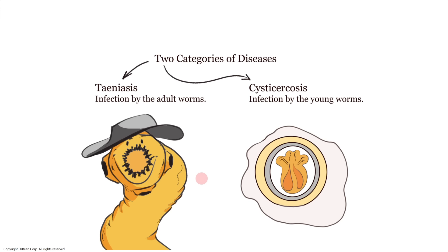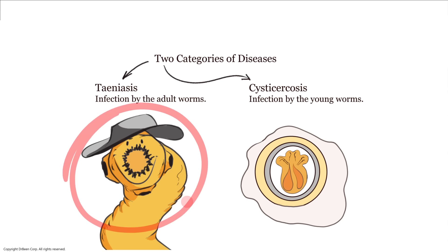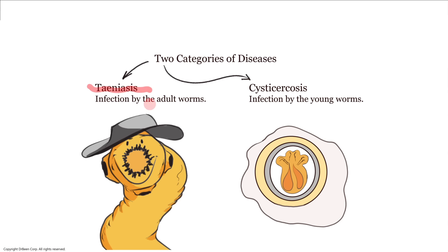This pathogen causes two types of diseases based on its maturity. The adult worm — Taenia solium — causes taeniasis, living in the upper intestine of humans or pigs. On the other hand, when it is in its larval or embryonic egg stage, it can produce cysticercosis — small bladders containing the worms within host tissues.